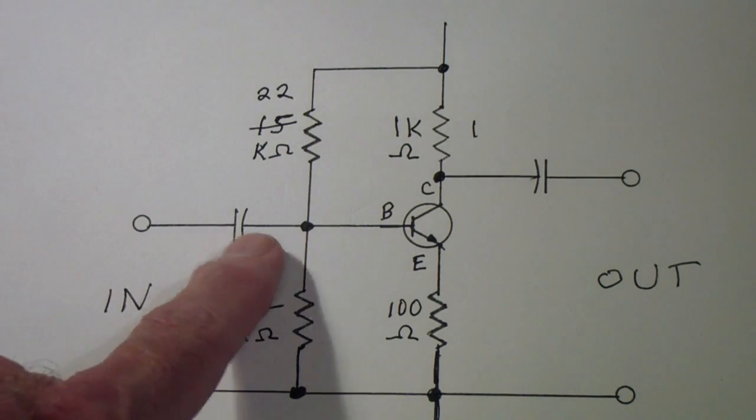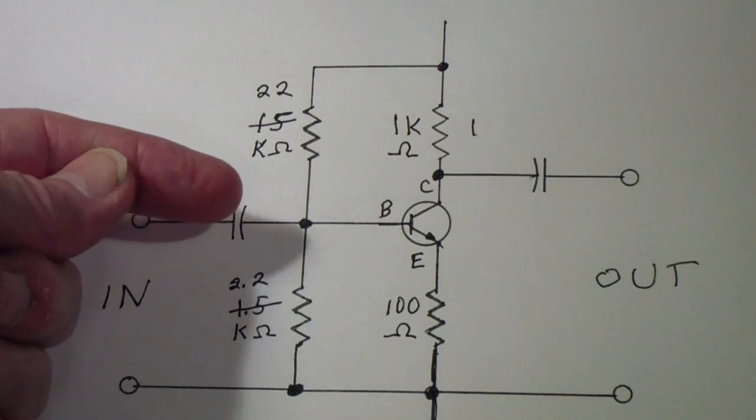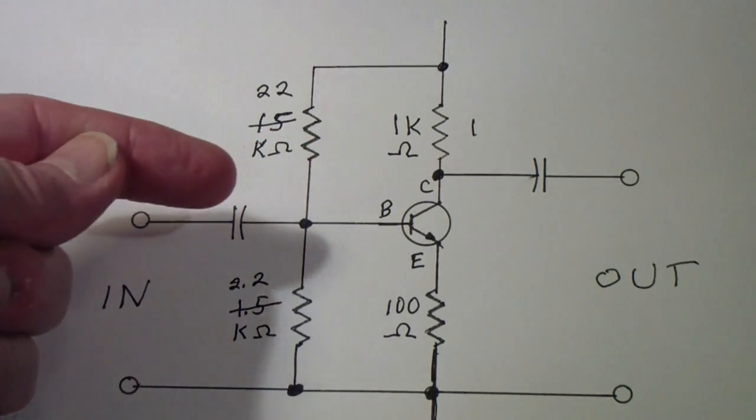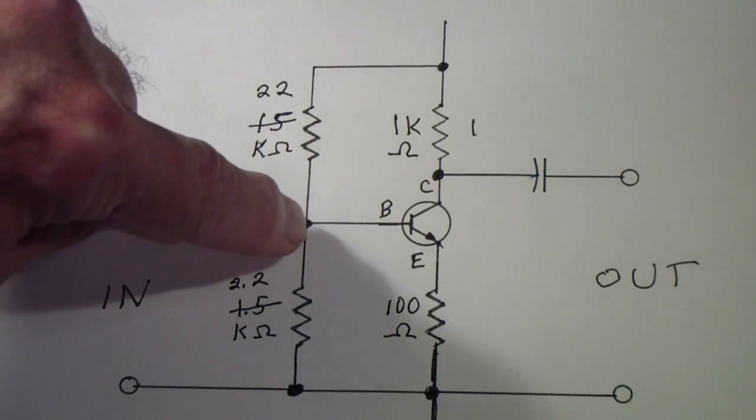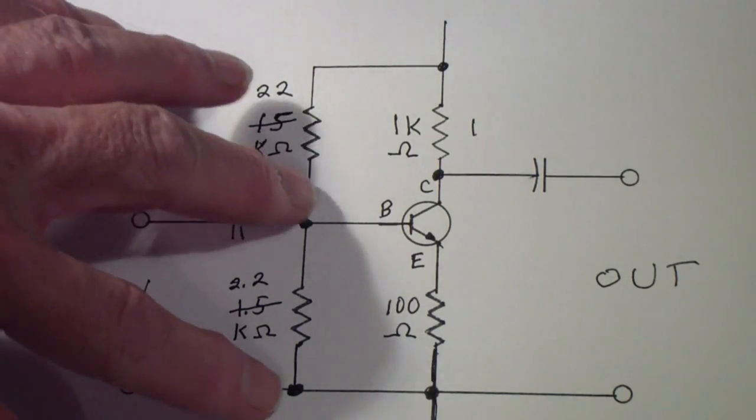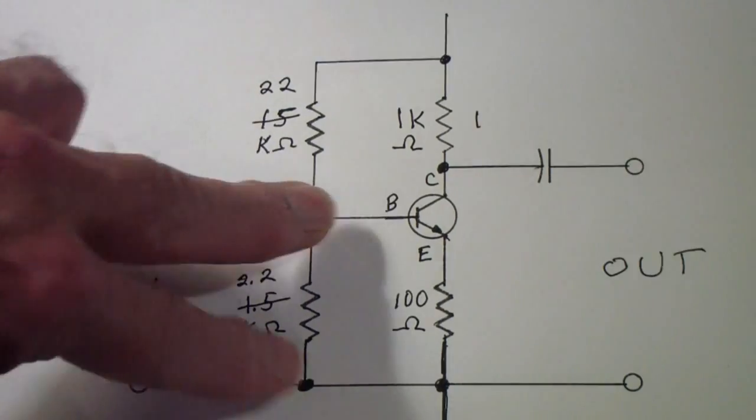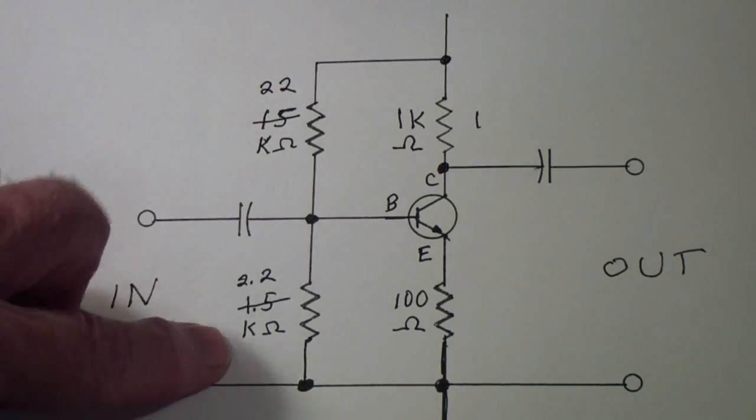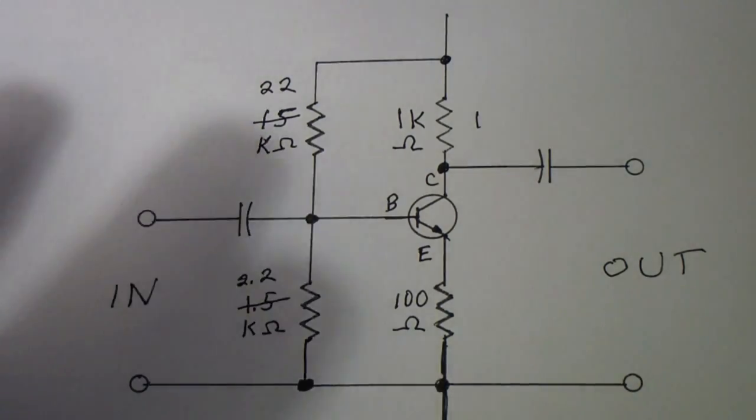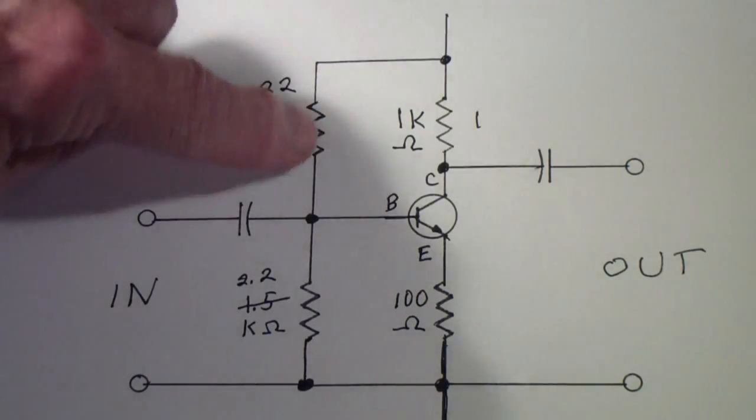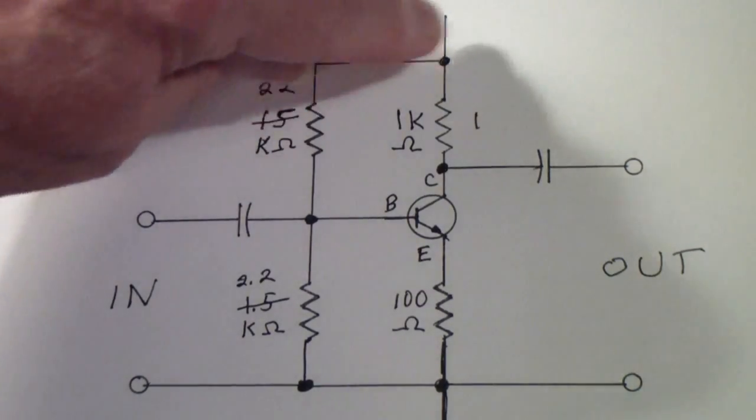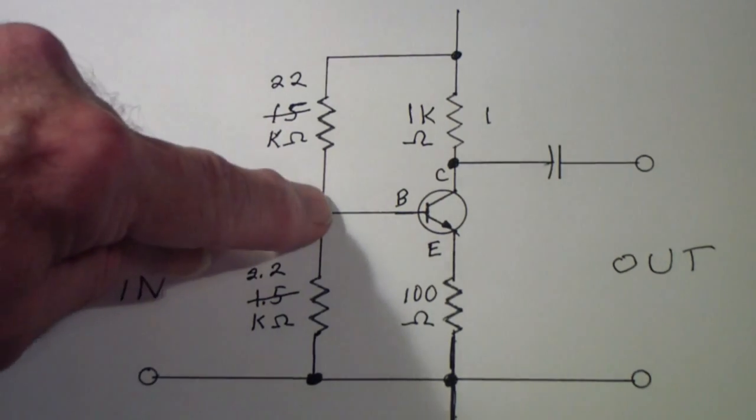And to do that we need to know what the impedance is looking into that point. In other words, if you had an impedance meter and you put it from this point to this point, you wouldn't read 2.2K ohms. You would read some different value because there are other components like this resistor, the transistor, that are also connected to that.